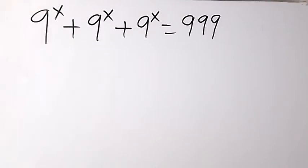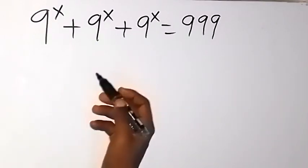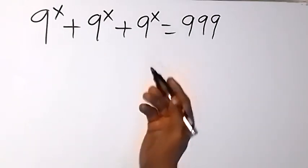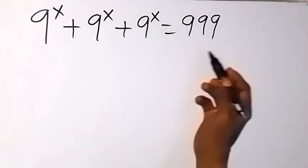Thank you for joining us. Here we want to find the value of x in this equation. 9 raised to power x plus 9 raised to power x plus 9 raised to power x equals to 999.